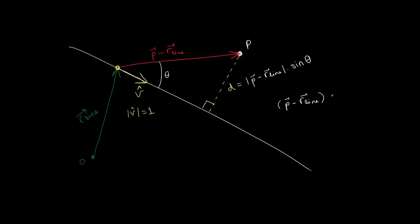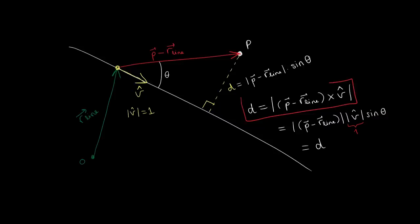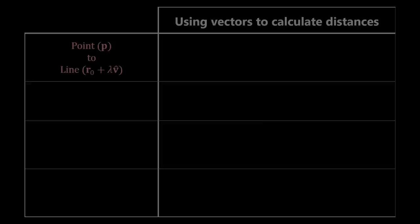The cross product between the vector p minus r_line and the unit vector v gives, by definition, the magnitude of the first vector times the magnitude of the second times sine of theta. Since the magnitude of v is 1, this cross product is exactly the distance d between the point and the line. Remember that the point labeled r_line can be any point on the line, for example r0 in the parametric equation. And remember that vector v must be normalized — if you are given a vector v that is not normalized, you have to normalize it first.